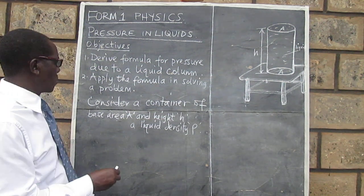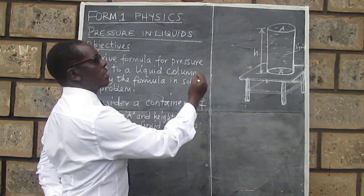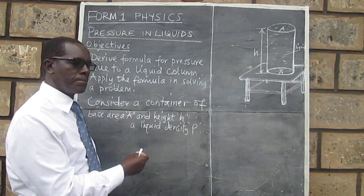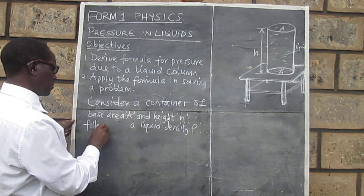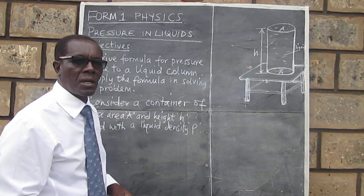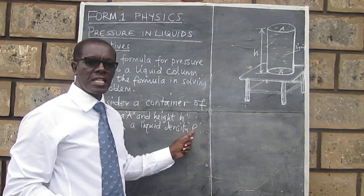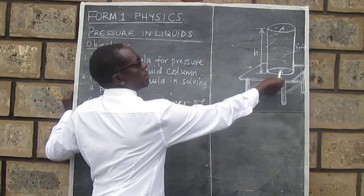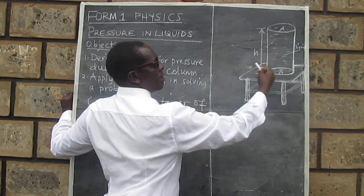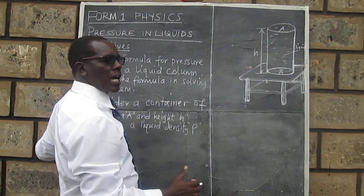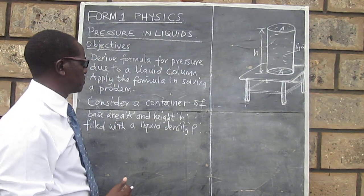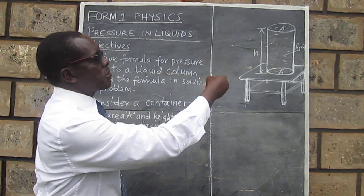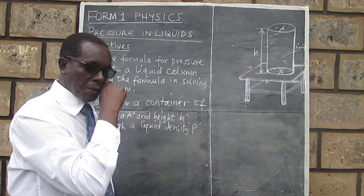For us to do this, we shall consider a container like the one you can see on the other side of the board — a cylindrical container filled with a liquid of density rho. We have taken a container with a cross-sectional area A, and since this is a cylinder, A is also the base area. We are assuming the container has a uniform cross-section. The container has a height H, and that is going to be the depth of the liquid in the container, so it is completely full of the liquid.